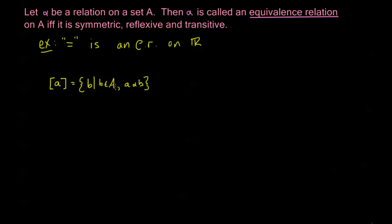All of the elements in this set are going to have this equivalence relation with each other because of our requirements for what an equivalence relation means. For example, A is going to be in the set because A alpha A, because alpha is reflexive. If A alpha B, then B also alpha A, because alpha is symmetric. And if B alpha C, then I also have that A alpha C, because alpha is transitive. So this is the set of all elements that are related via alpha to A. I could use any element in here as my representative of the equivalence class, because they're all related to each other in the exact same way.